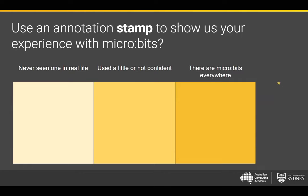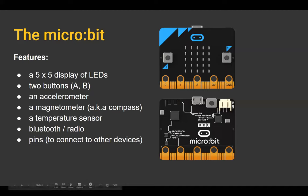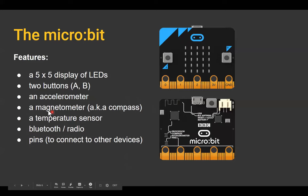The micro:bit is a small computer with quite a few features: a five-by-five LED display, two buttons — A and B — an accelerometer that tells the micro:bit which way it's facing, whether it's facing up or down, if it's been shaken, or even thrown in the air. There's also a magnetometer, which is a compass — quite fun, but I wouldn't trust it to get me out of bushland.